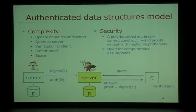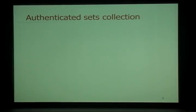What we are interested in is minimizing the complexity of this model: how long it takes to do an update of the dataset at both the source and the server, how long it takes for the server to compute a proof (query complexity), and how long it takes to verify. We want a well-defined notion of security: a polynomial-time adversary should not be able to provide a wrong answer along with a proof that verifies. We use computational assumptions here.